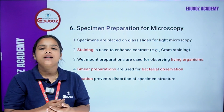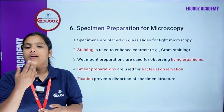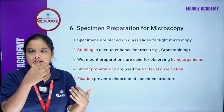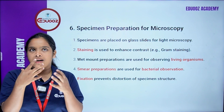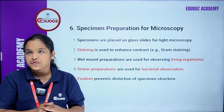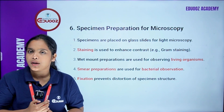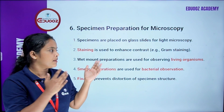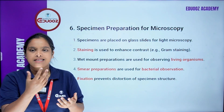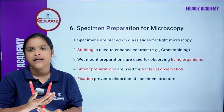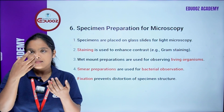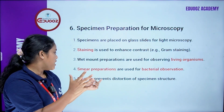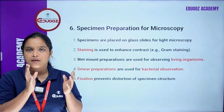Specimen preparation: specimens are placed on glass slides for light microscopy. Staining is used to enhance contrast, such as Gram staining. Wet mount preparation is used for observing living organisms. Smear preparation is used for bacterial observation. Fixation prevents distortion of specimen structure, using heat fixation.